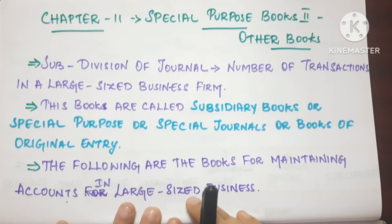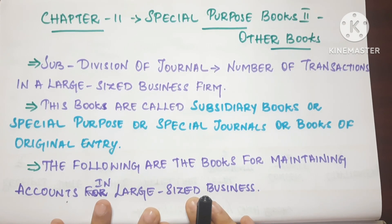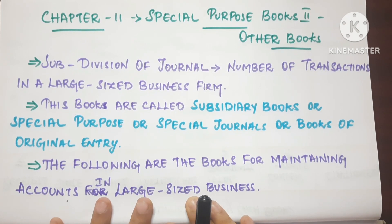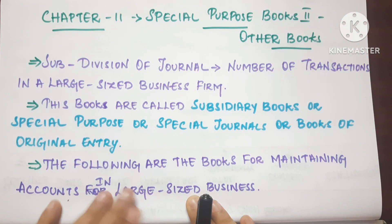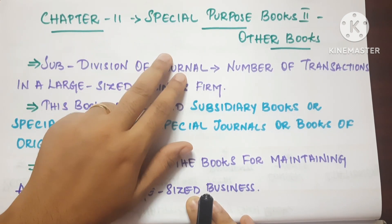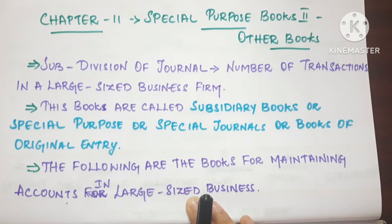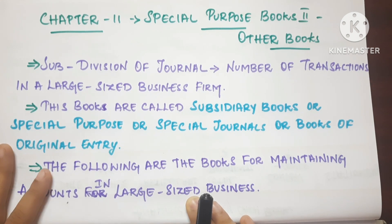Hi friends, welcome back to my channel Sabi Learner. In this video, we will see the 11th accountancy CBC Syllabus Chapter 11 Special Purpose Book Part 2 Other Books. In the last chapter, we saw cash books. In this video, we will see other special purpose books.